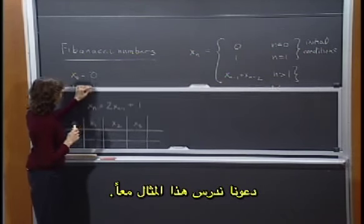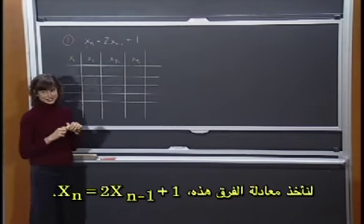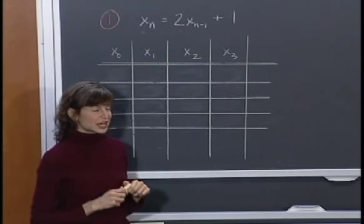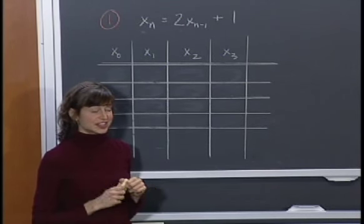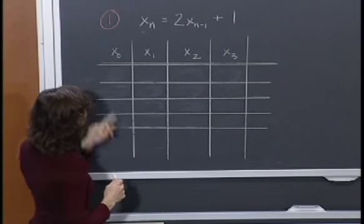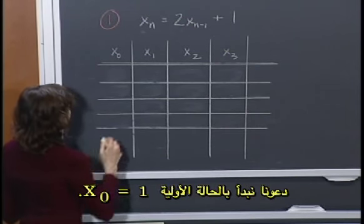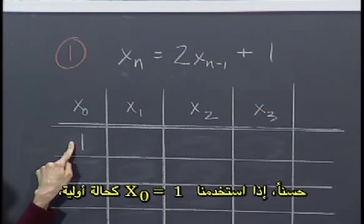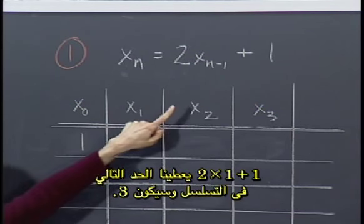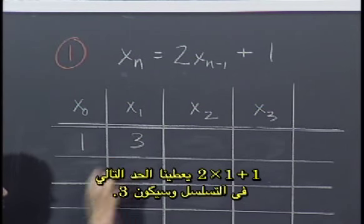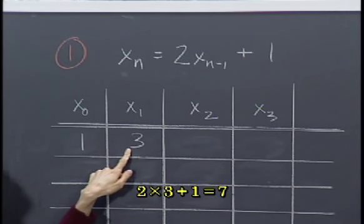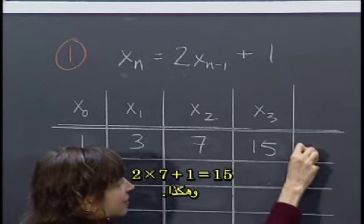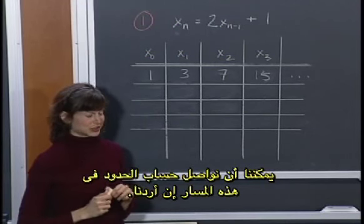Just like following the path of a ball across the sky is following its trajectory, looking at the sequence of values that a difference equation takes is also called a trajectory. Let's look at an example. Consider this difference equation: xn equals 2 times xn minus 1 plus 1. Let's try the initial condition x0 equals 1. Using x0 equals 1, 2 times 1 plus 1 gives us 3. Then 2 times 3 plus 1 gives us 7. Then 2 times 7 plus 1 gives us 15, and so on.